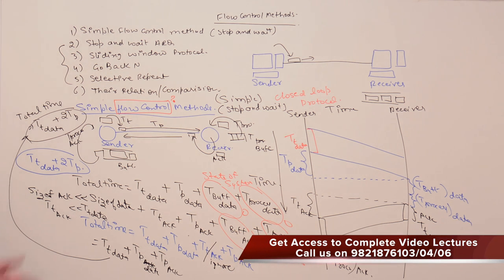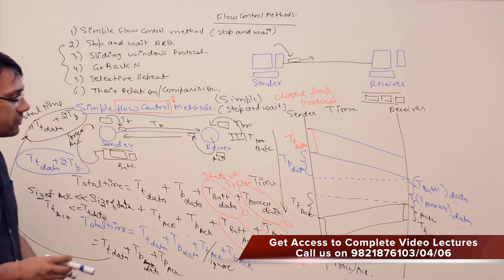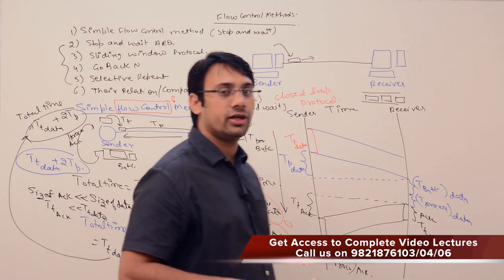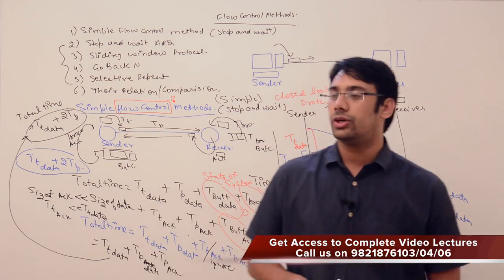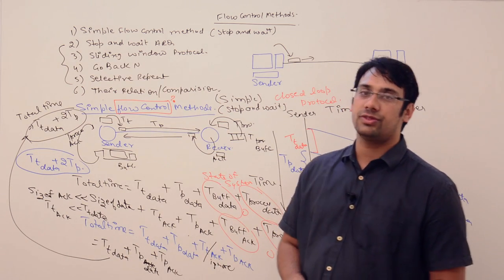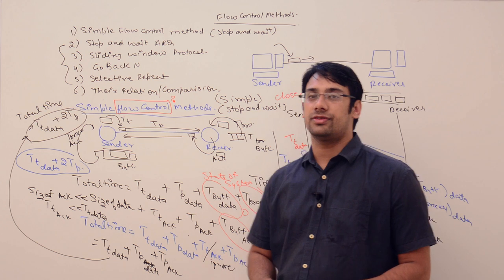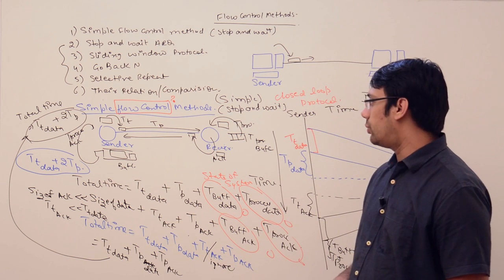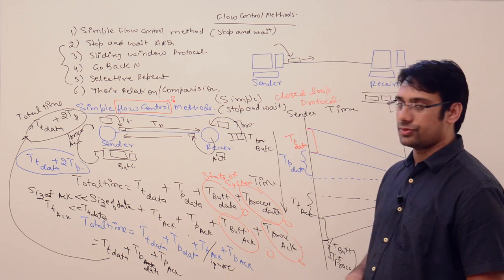So this is the total time, and this is the simple flow control method. After studying the simple flow control method, try to identify what can be the different problems we can face with simple flow control methods.